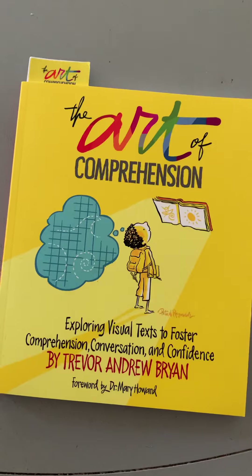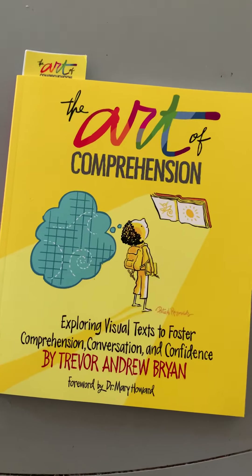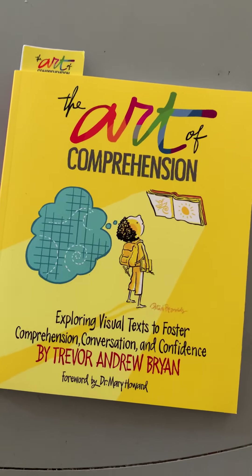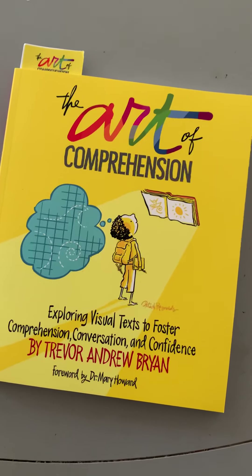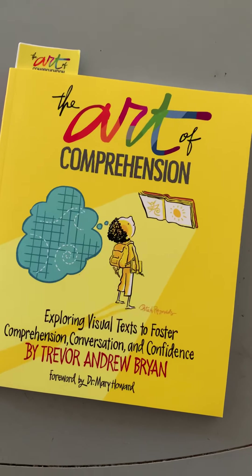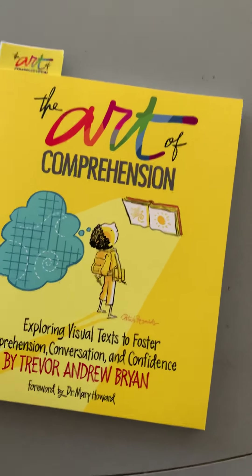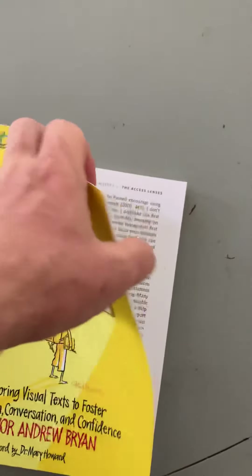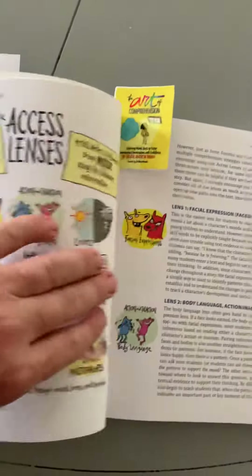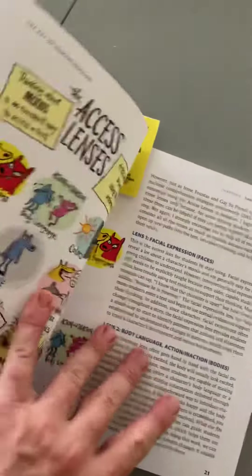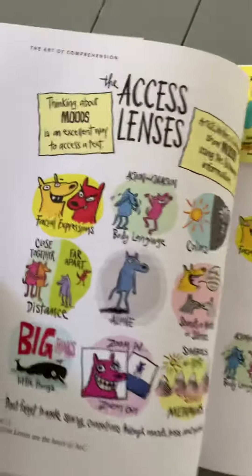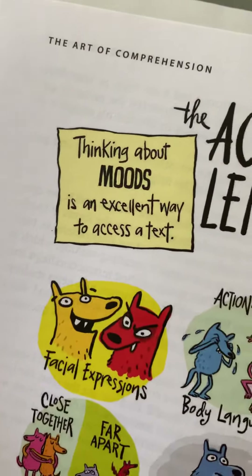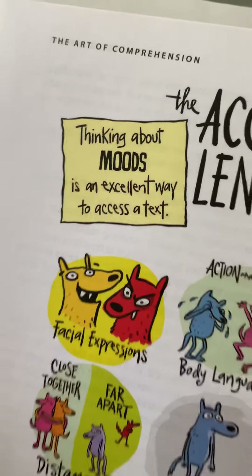How characters feel and why they're feeling that way are really two main questions that readers have to answer in order for them to understand the story. And the tool that I developed to help students to think about the moods in stories are the access lenses. Right at the top it says thinking about moods is an excellent way to access a text.